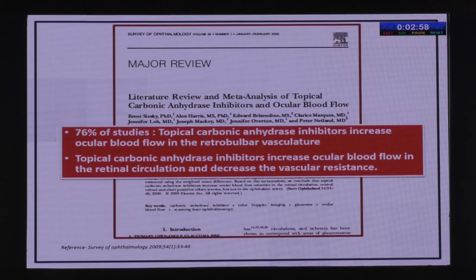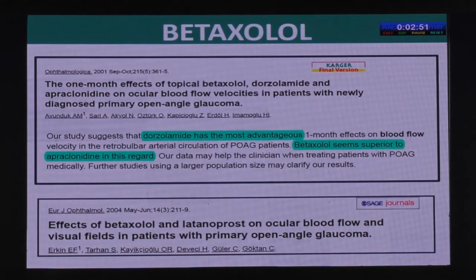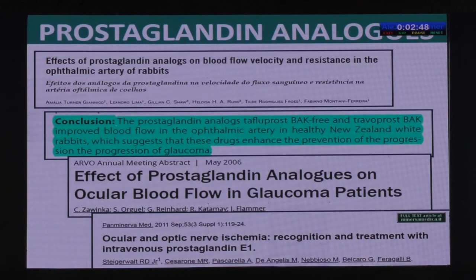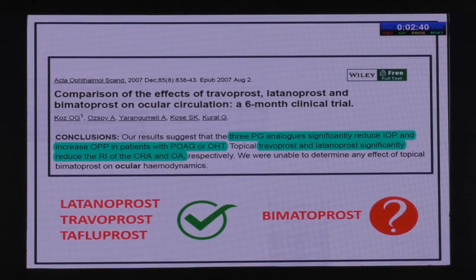So if you have a patient with NTG where you suspect something vascular is going on, you can prescribe a carbonic anhydrase inhibitor. Betaxolol has also shown some promise. And perhaps surprisingly, prostaglandin analogues — latanoprost, travoprost, and tafluprost — have been proven to increase ocular blood flow. Bimatoprost is a little suspect as there are no real studies on it.